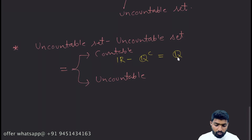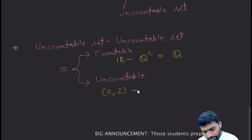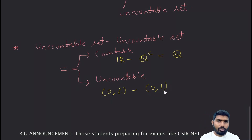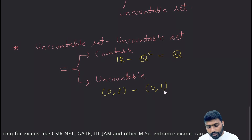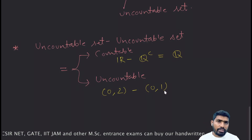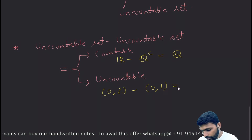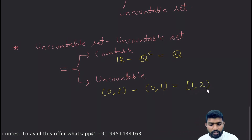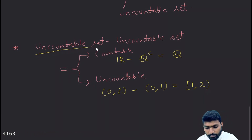For the second case — when uncountable minus uncountable is uncountable — consider: the interval (0, 2) minus the interval (0, 1). Both are uncountable sets. Their difference gives us the interval [1, 2], which is also an uncountable set.